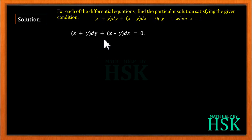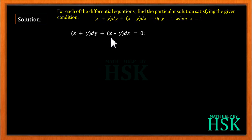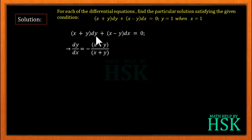We have been given this differential equation, and first we are going to write it in the form dy/dx = f(x, y). To do this, I'm going to take the term (x - y)dx to one side and cross multiply to obtain dy/dx, so (x - y) becomes the numerator and (x + y) becomes the denominator.